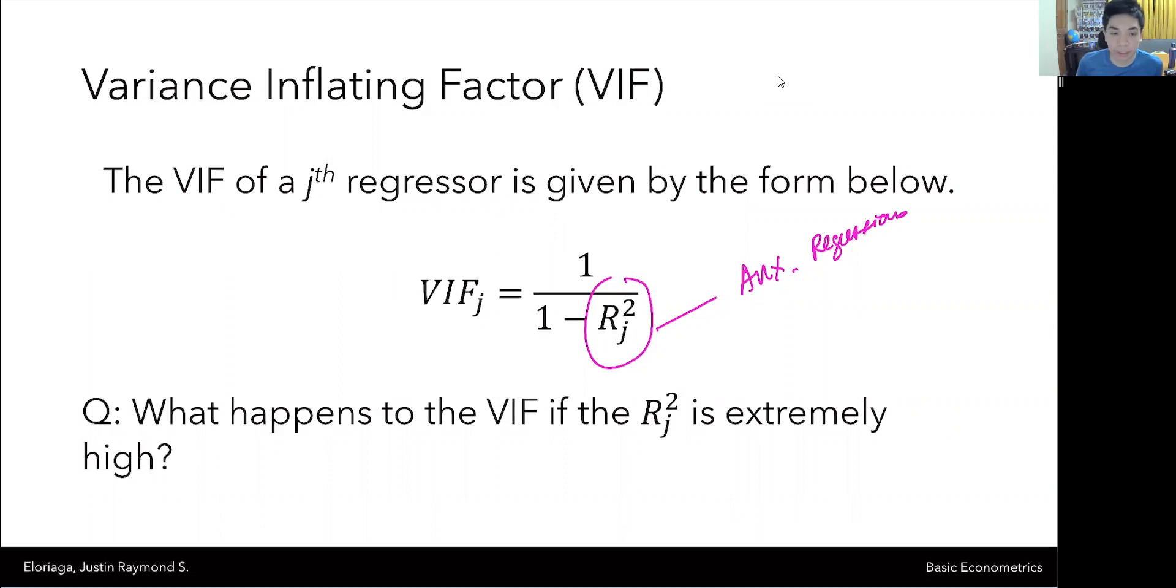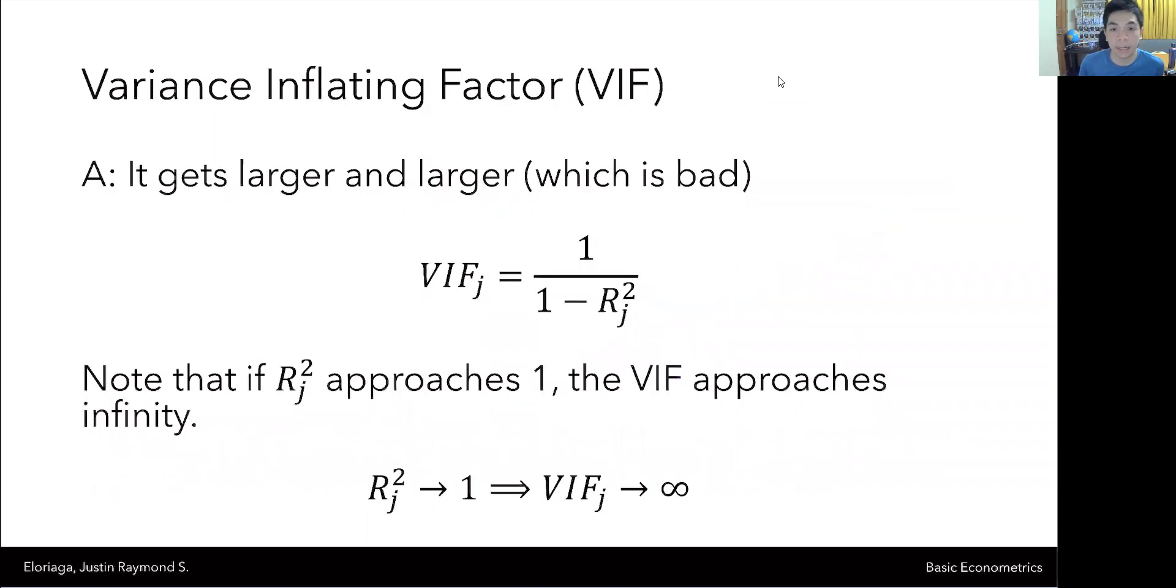A common question is what happens to the variance inflation factor if the auxiliary R squared is extremely high? Well, that's simple really. It gets larger and larger. For example, if the R squared sub J approaches a value of 1, that is a perfect fit, then obviously 1 minus a very near number to 1 would be a low number. So 1 divided by a very low number becomes a high number. VIF increases when the auxiliary R squared approaches closer to 1.